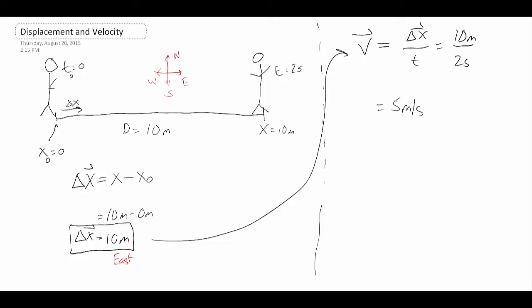And the last thing we want to do again is have a direction. Again, the velocity was in the same direction as my displacement—it was to the right. And so we just want to put five meters per second east. And that's a very quick demonstration of how to actually calculate displacement and velocity.